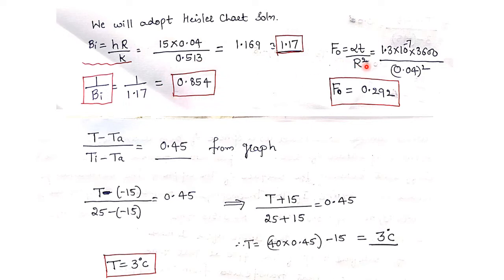We also need the Fourier number for the graph. The Fourier number is given by alpha times t divided by r squared. Alpha is 1.3 into 10 to the power minus 7, and t is one hour which equals 3600 seconds. So Fourier number equals 1.3 into 10 to the power minus 7 into 3600 divided by 0.04 squared, giving a value of 0.292.